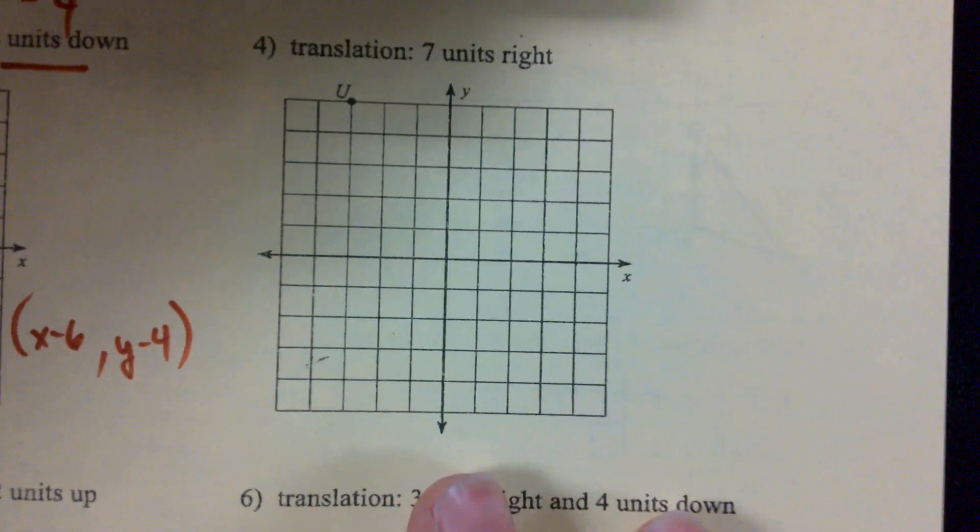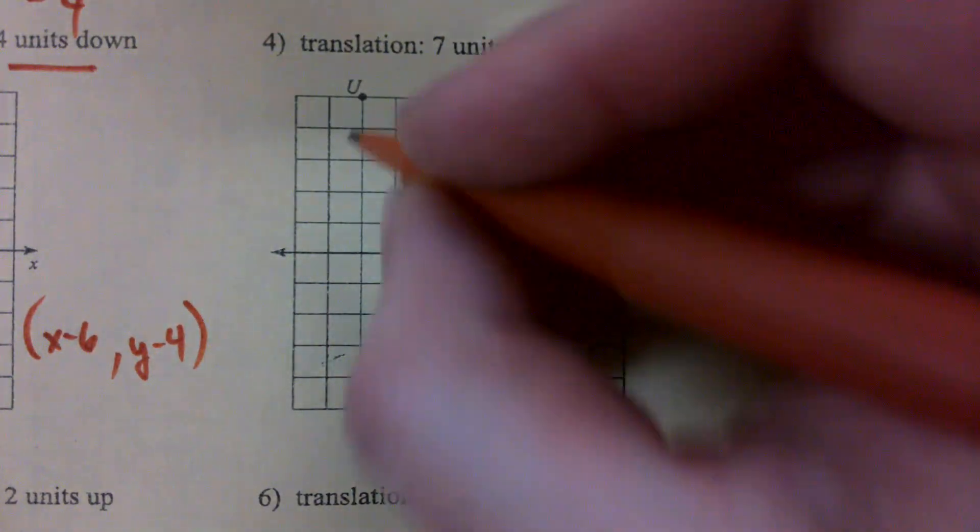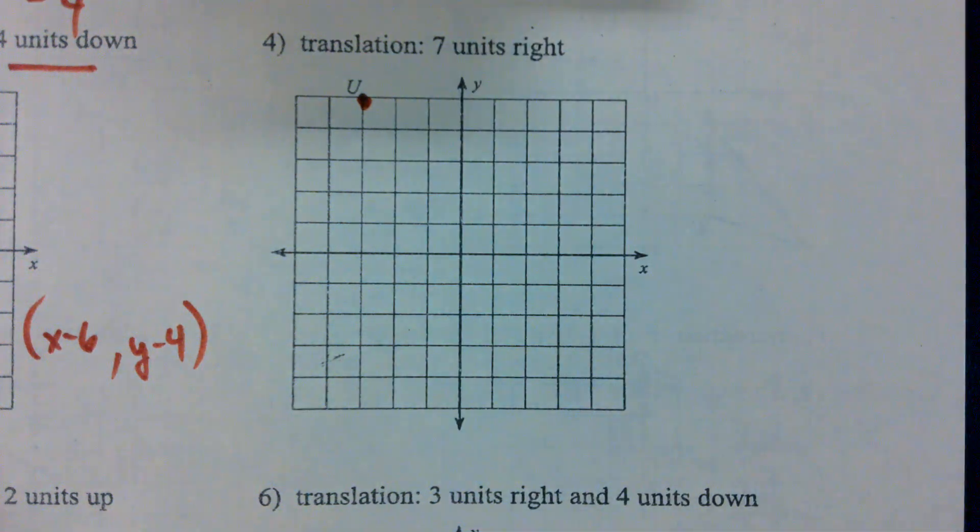Let's take a look over at number 4 for a second. Again, we're starting right here at point U. Our translation here is just 7 units to the right. So we only have an X movement, no Y movement, but that's fine.